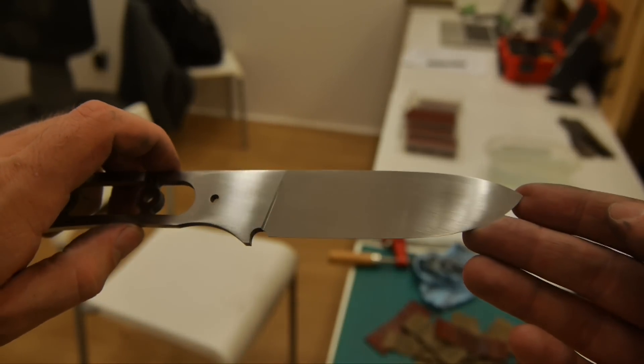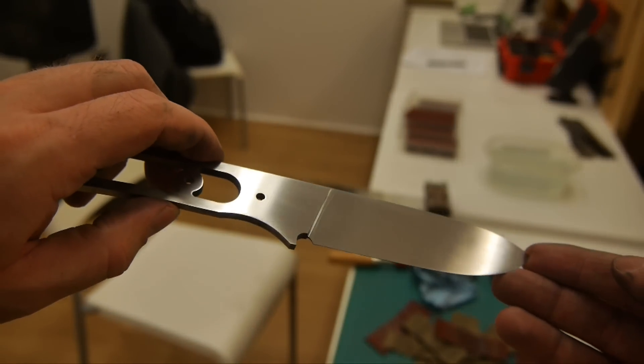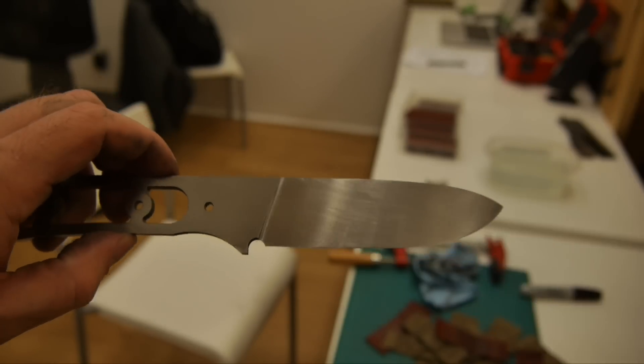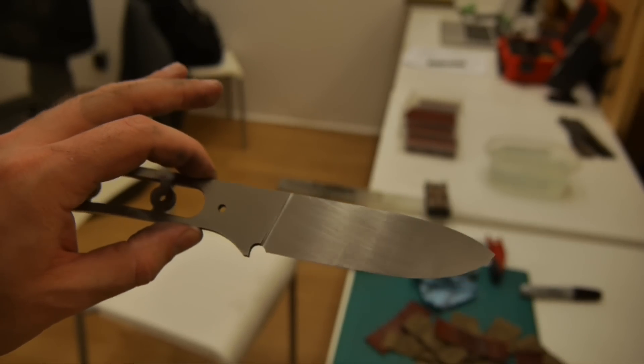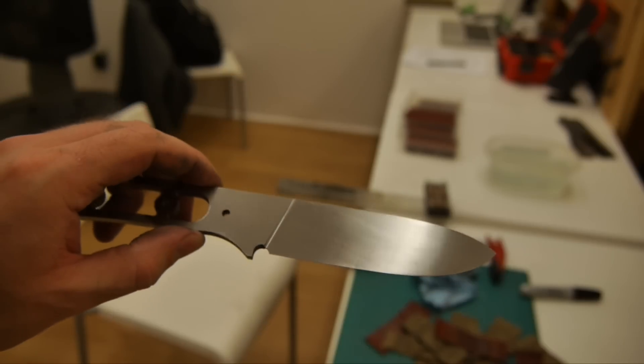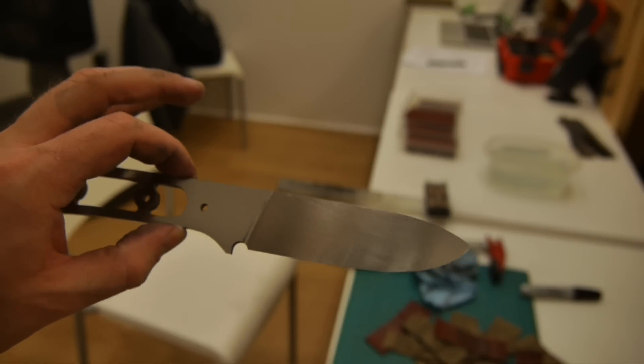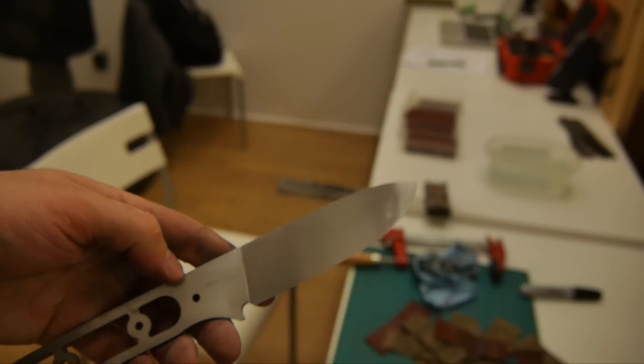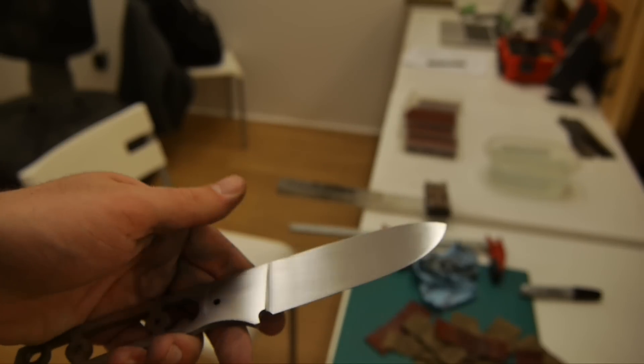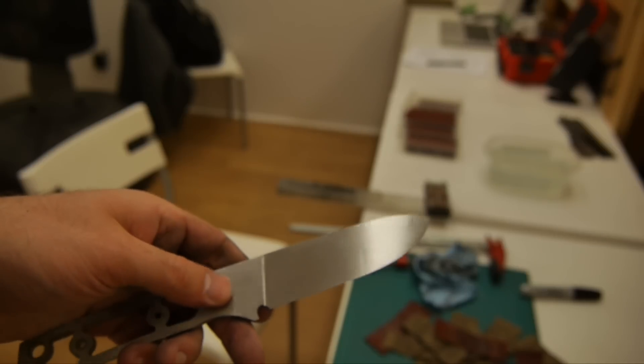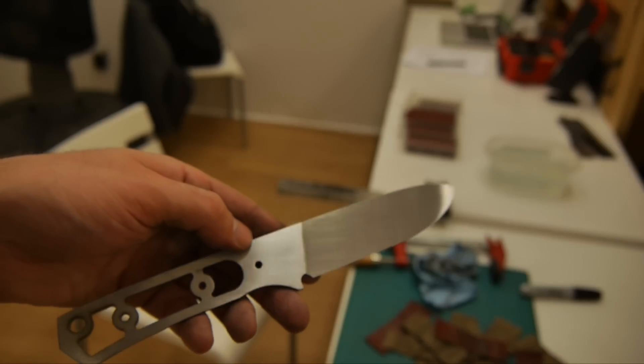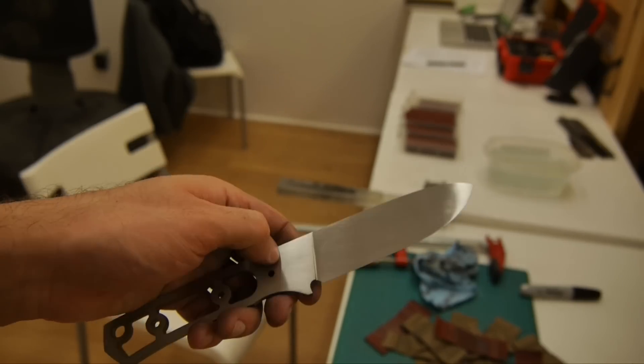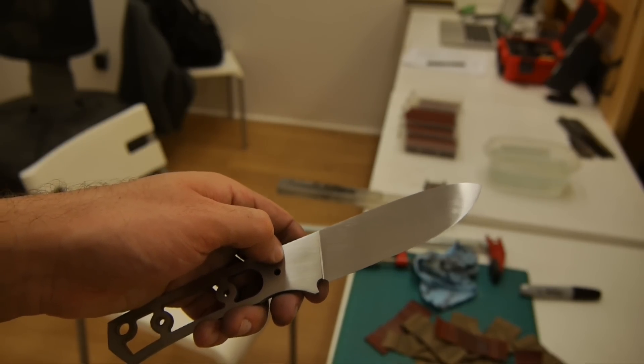Right so at this point we've got a nice clean 600 grit finish over the entirety of the blade and the ricasso. So this is the point at which I would stop and go away and heat treat the blade. Because right now this blade is not heat treated. The sanding is easier when the blade isn't heat treated but you don't get quite as nice a finish on soft steel. The finish comes up nicer on harder steel. So at this point I would go away and heat treat the blade and then come back and I'll walk you through the rest of the process.